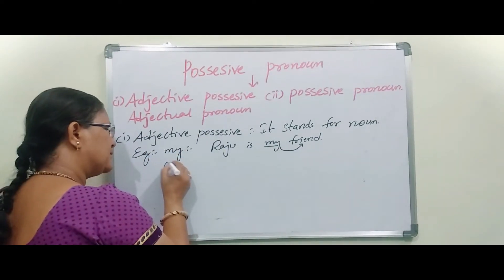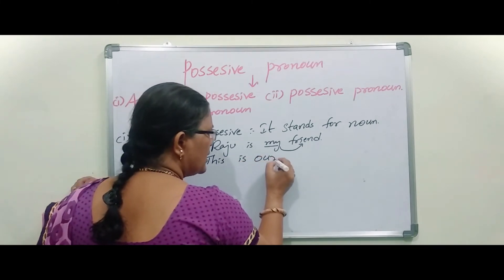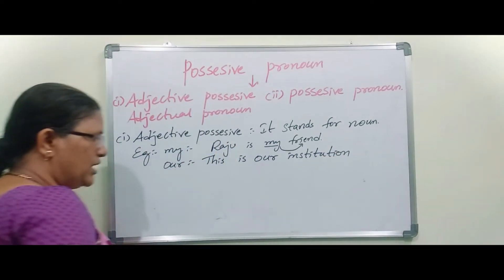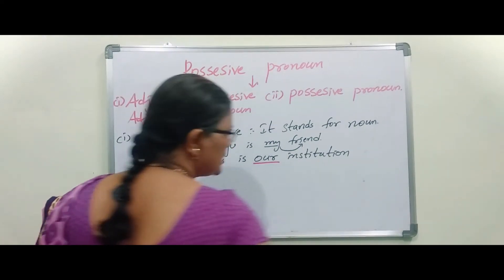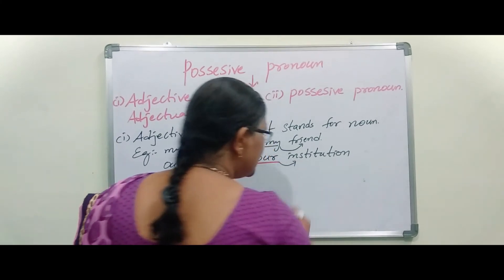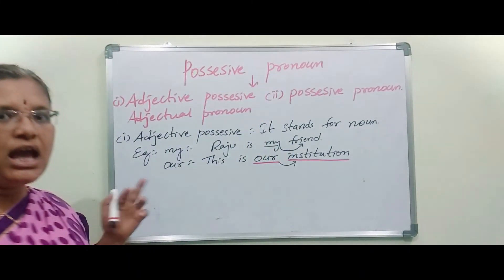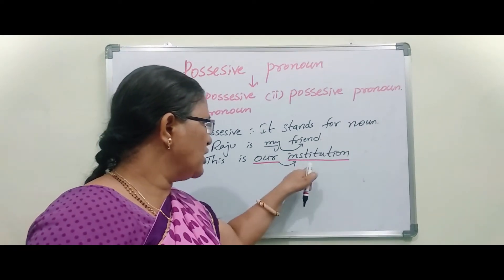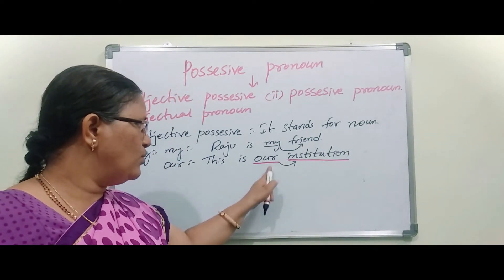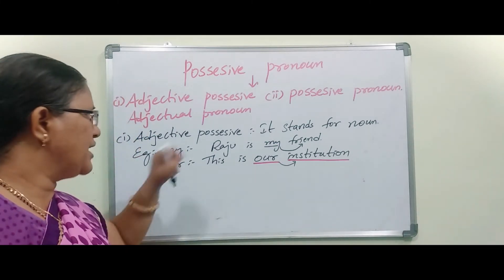Next: 'our.' This is our institution. Here, 'our' is possessive adjective because it is describing and giving information about 'institution.' Institution is a common noun, and 'our' is talking about this institution — whose institution? That's why 'our' comes under Adjective Possessive.